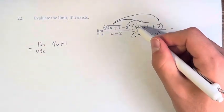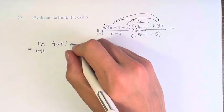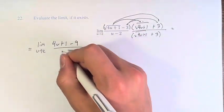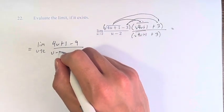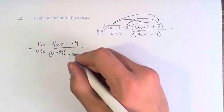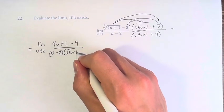And then our last term is negative 3 times 3, which is negative 9. This is divided by u minus 2 times the square root of 4u plus 1 plus 3.